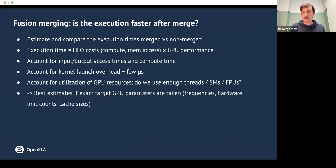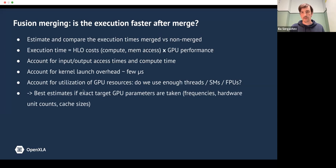The execution time of a fusion is defined by two things: the attributes of the fusion itself — the amount of compute and the amount of memory access — and the GPU performance. We have to account for input and output access times, kernel launch overhead, and whether we are efficiently using the whole GPU or if the fusion is small and only using a few cores. This tells us we need parameters of a specific GPU to model the execution time on that exact GPU.